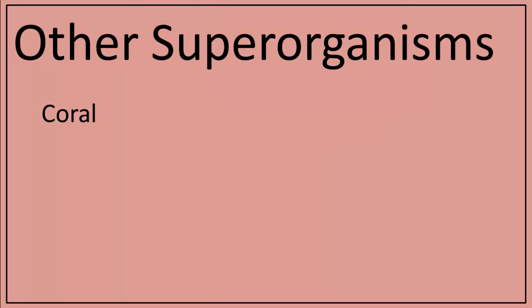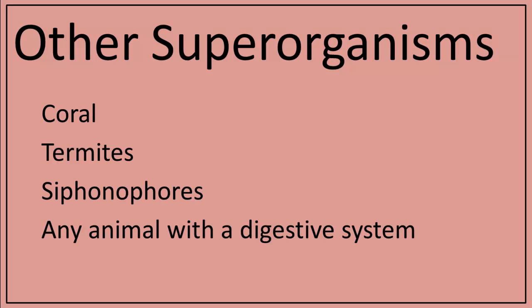Superorganisms come in many forms. Other examples include coral, termites, siphonophores, and, in some sense, almost any animal with a digestive system, since microbes in our digestive system are important in helping us absorb nutrients from food.